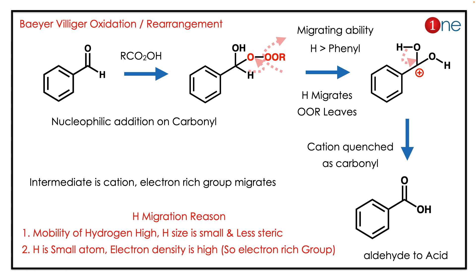The migrating ability of hydrogen is higher because hydrogen is small, so mobility is high. And since hydrogen is small, the electron density is also very high. So hydrogen is a very good migrating group when compared to phenyl.